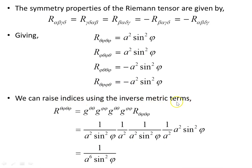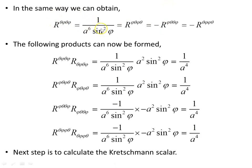We can raise indices using the inverse metric. Since our metric is diagonal, the inverse metric is simply the reciprocal of the diagonal terms. Multiplying each component by the appropriate inverse metric terms, we produce the Riemann components with all indices raised. We can then form products of these fully-contravariant Riemann components with the fully-covariant ones. There are four such non-zero products, each evaluated for the 2-sphere.